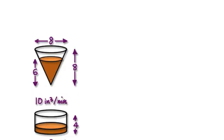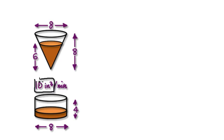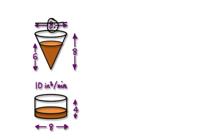Okay, let's give you guys some more practice. So let's say you're trying to make some coffee. This here is your filter, and your coffee would slowly drip. The rate at which it's dripping is 10 inches cubed per minute. So this distance here is 8 inches.